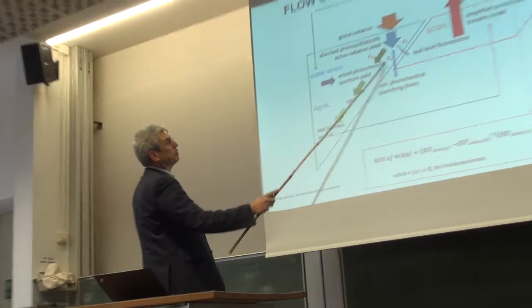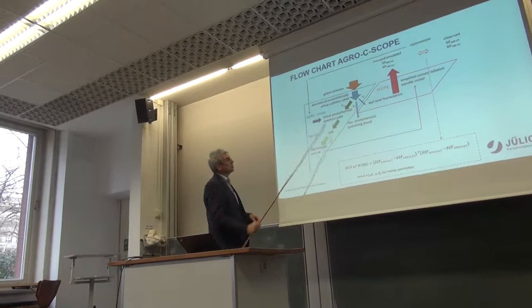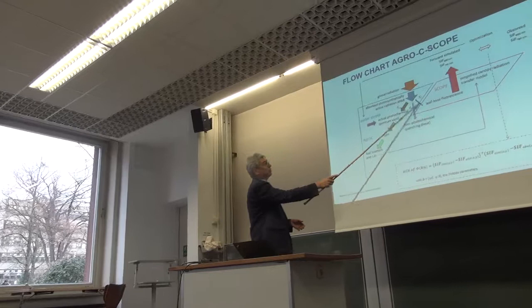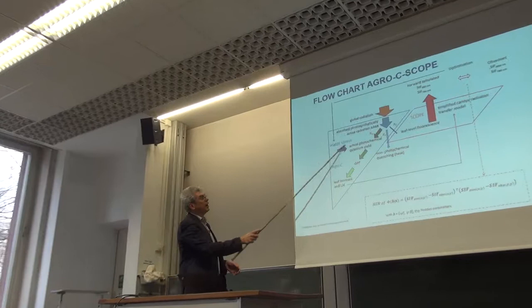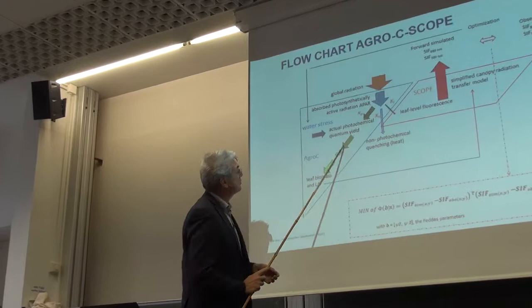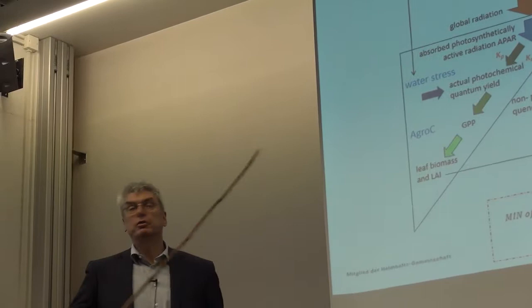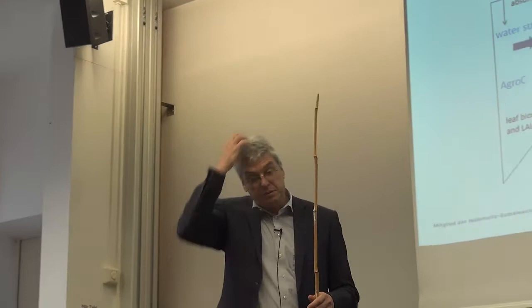There are many things to consider — how radiation is distributed into photosynthetically active radiation, non-photochemical quenching, heat loss, and leaf-level fluorescence. This is ongoing work on how to model the effect of water stress on photosynthetic activity. The model provides leaf biomass and LAI into the radiative transfer model — that's the whole idea of the loop.